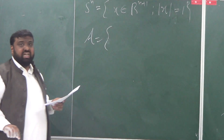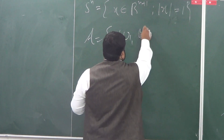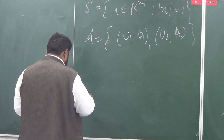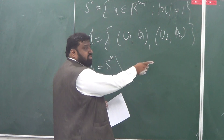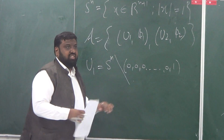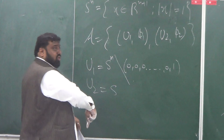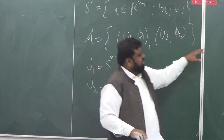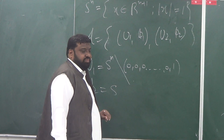Here's the atlas for it. I can cover this atlas by two parts: (U1, φ1) and (U2, φ2). U1 is S^n with the north pole removed — that is, the point (0, 0, ..., 0, 1) thrown away. And U2 is S^n with the south pole removed. Can you see the analogy between U1, U2 here? You can already feel the analogy.